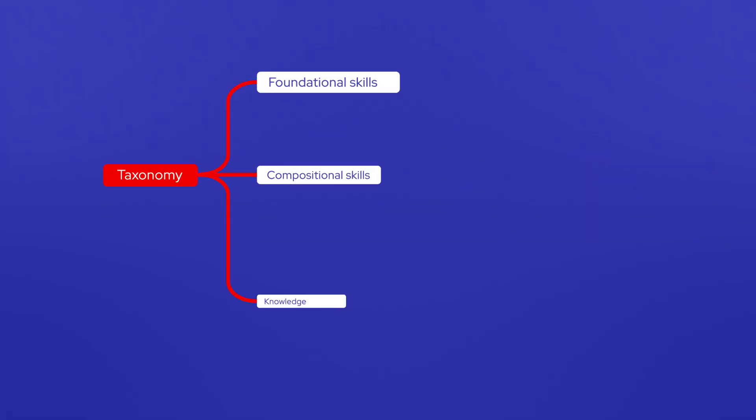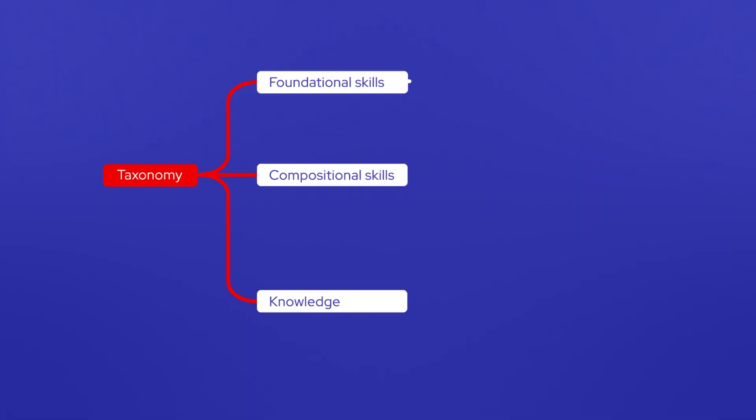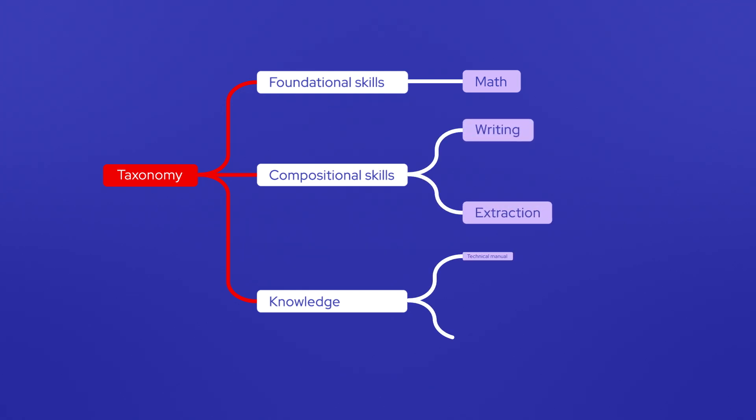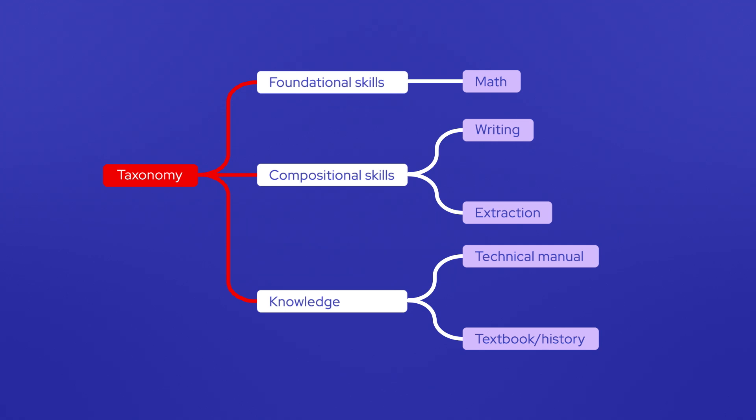Normally in AI today, a lot of folks who are trying to fine-tune models take the blender approach — they just take whatever data they have available, kind of throw it in a blender, mix it all up, and then check to see if it came out nice. With a taxonomy-based approach, we're actually building out a tree to make sure that the knowledge and skills we're putting into the model are more balanced.